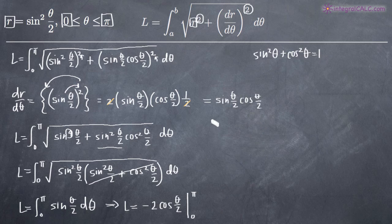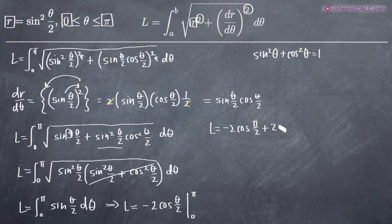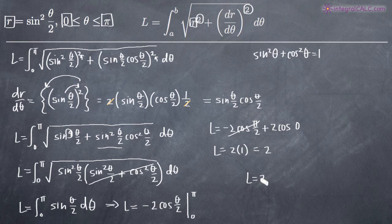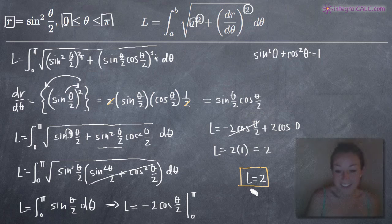Plugging in our limits: we get negative two cosine of pi over two, minus negative two cosine of zero over two. Cosine of pi over two equals zero, so the first term is zero. Cosine of zero equals one, so the second term gives us plus two times one, which is two. Therefore the arc length of the polar curve r equals sine squared of theta over two on the range zero to pi is two. That's our final answer.